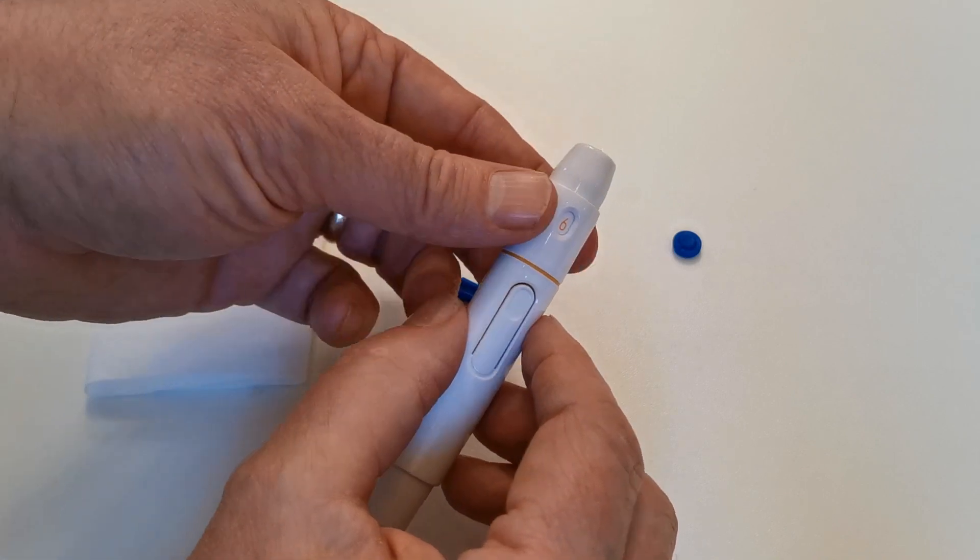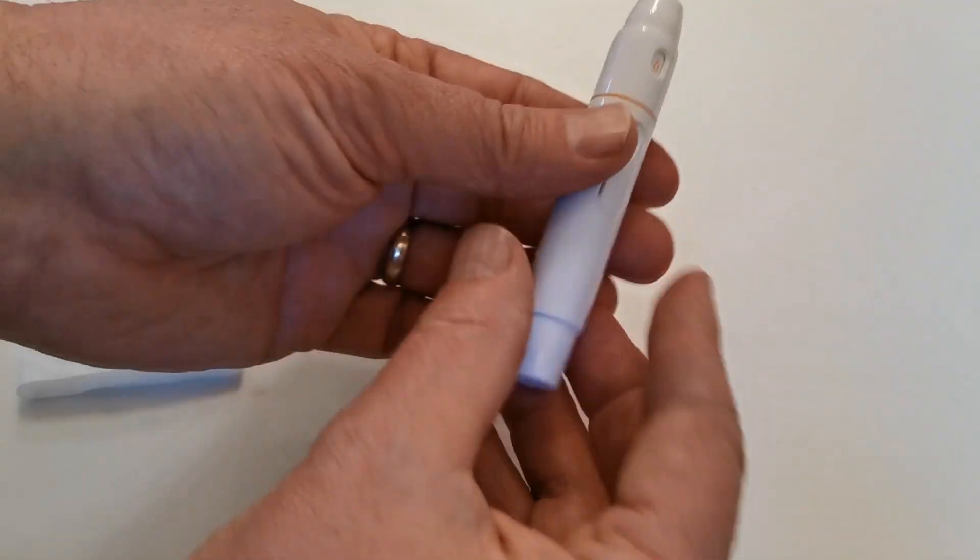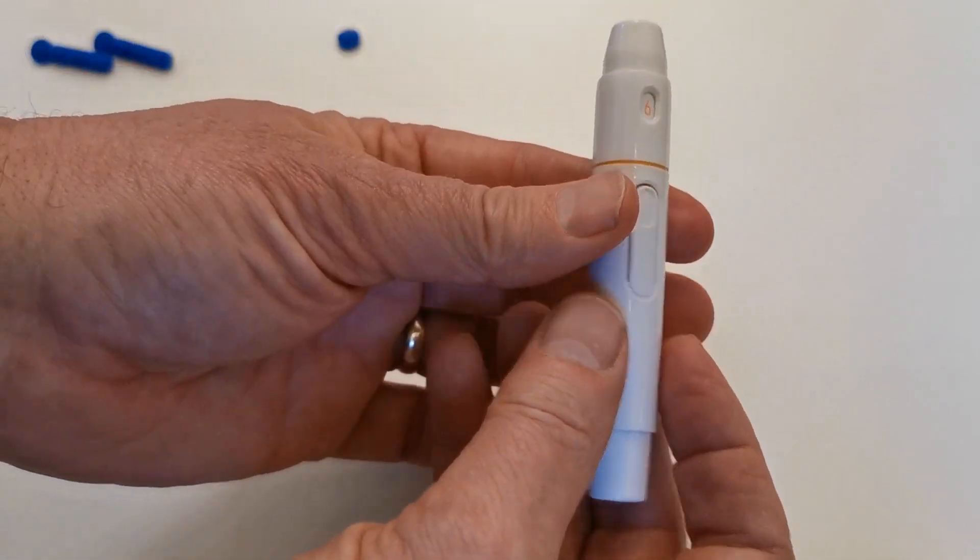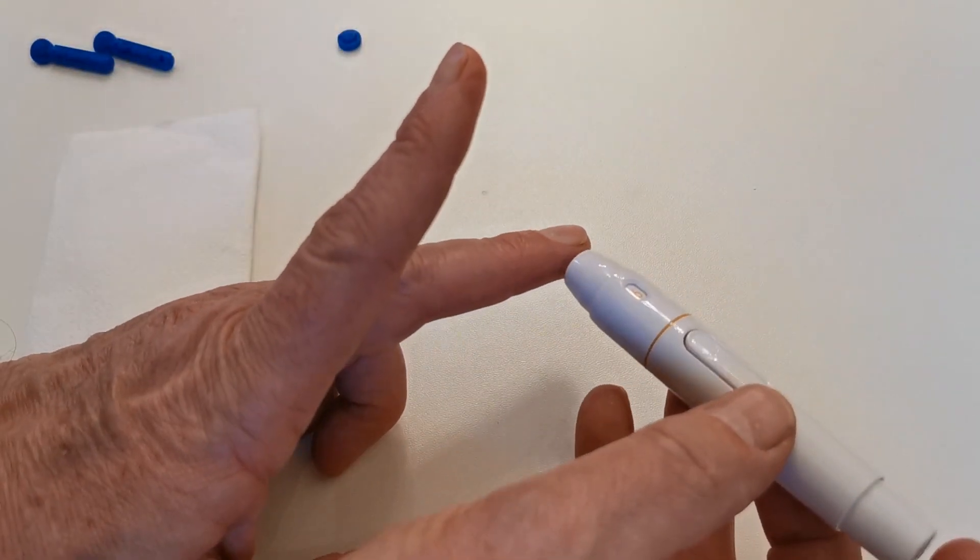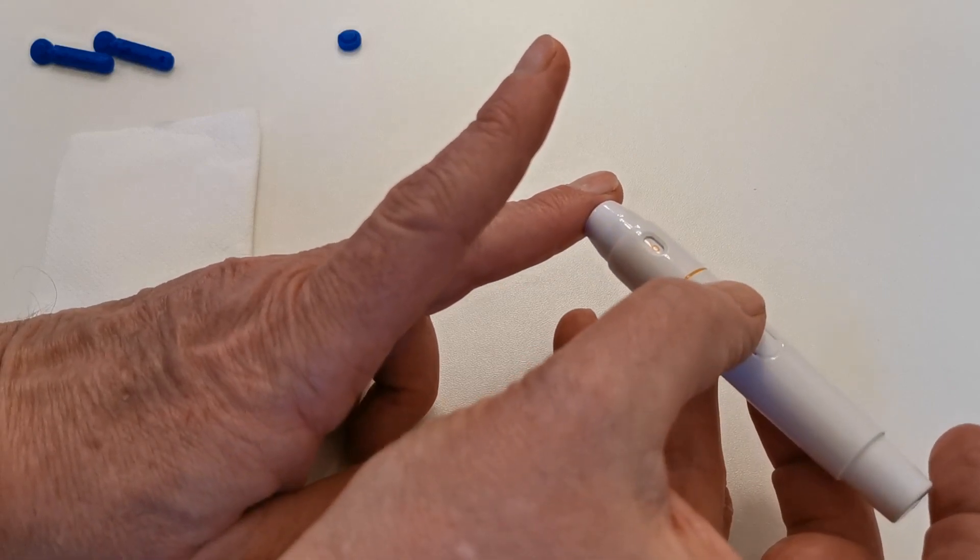We've got at least, I think, two mils there setting on six. So, when you're happy with that, set the lance spring, apply it again firmly against the side of the finger and trigger the lance.